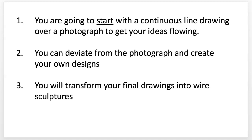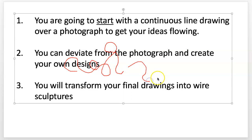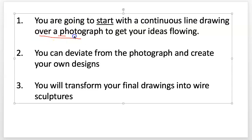You're going to start with the continuous contour drawing — some line drawings over photographs. What do we mean by continuous line drawing? You don't lift your pen or pencil. The main, most important thing with continuous line drawings is you keep your pen and pencil on the page the whole time. Why is that important? I'll show you in the next slide. Then you can deviate from the photograph and create your own designs after you do some over a photograph. First, do them over the photographs, and you'll transform them into your final drawing.